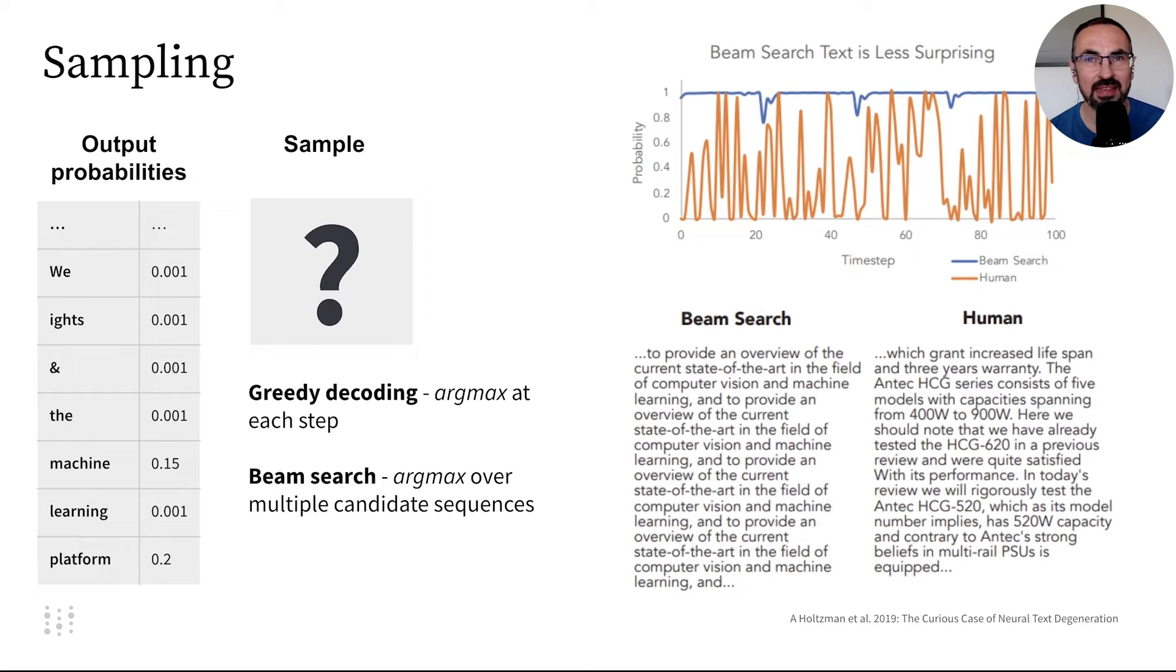However, neither method results in natural text. Text generated via BeamSearch often has repetitions and lacks meaning. Researchers compared BeamSearch to human-generated text, finding significant differences. Human text appears more interesting and relevant.